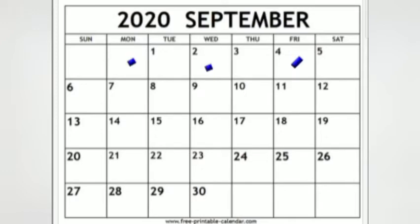4th question: what will be the date of next Friday? See, what is the date of next Friday? That is 11th September.